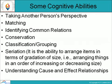Some cognitive abilities. Taking another person's perspective is one cognitive ability. Cognitive ability means understanding another person's situation — how to understand it. Other cognitive abilities include matching, identifying common relations, conservation, classification, grouping, and seriation. Seriation is the ability to arrange items in terms of gradation of size — that is, arranging things in order of increasing or decreasing size. Understanding cause and effect relationships is also part of cognitive abilities.